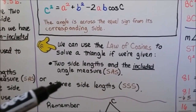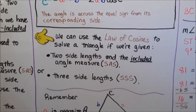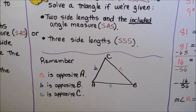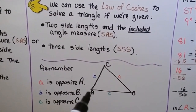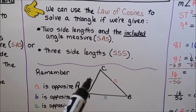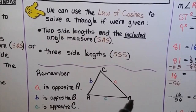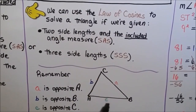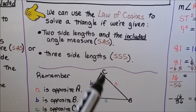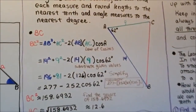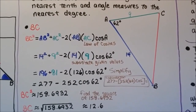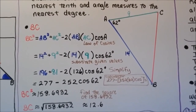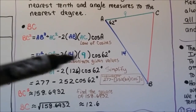I'm going to show you a cool formula at the end of the video about the three side lengths case. Remember that side a is opposite angle A, side b is opposite angle B, and side c is opposite angle C. Using the law of cosines, we can find each measure and round lengths to the nearest tenth and angle measures to the nearest degree. We want to find side BC.